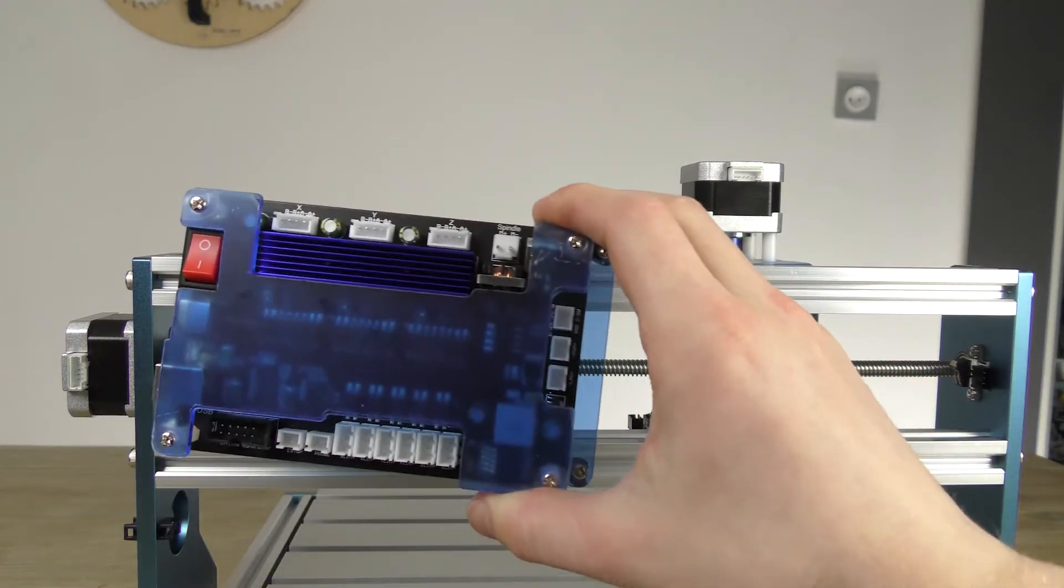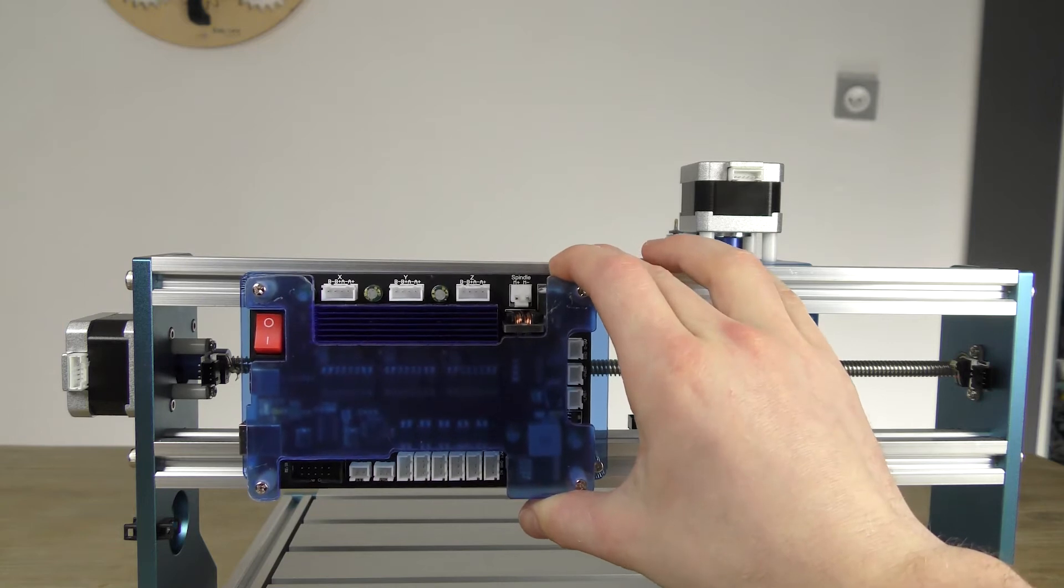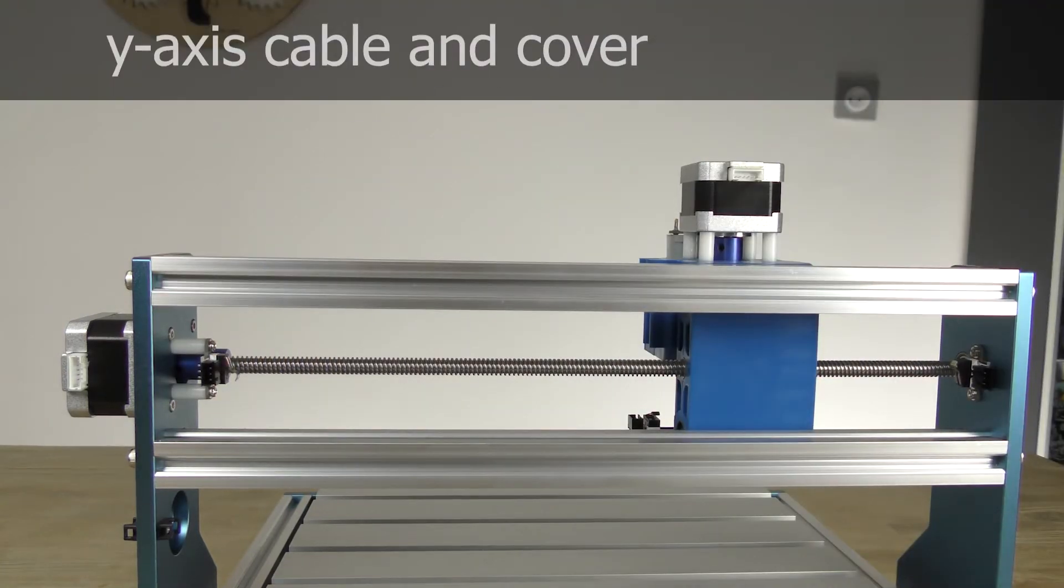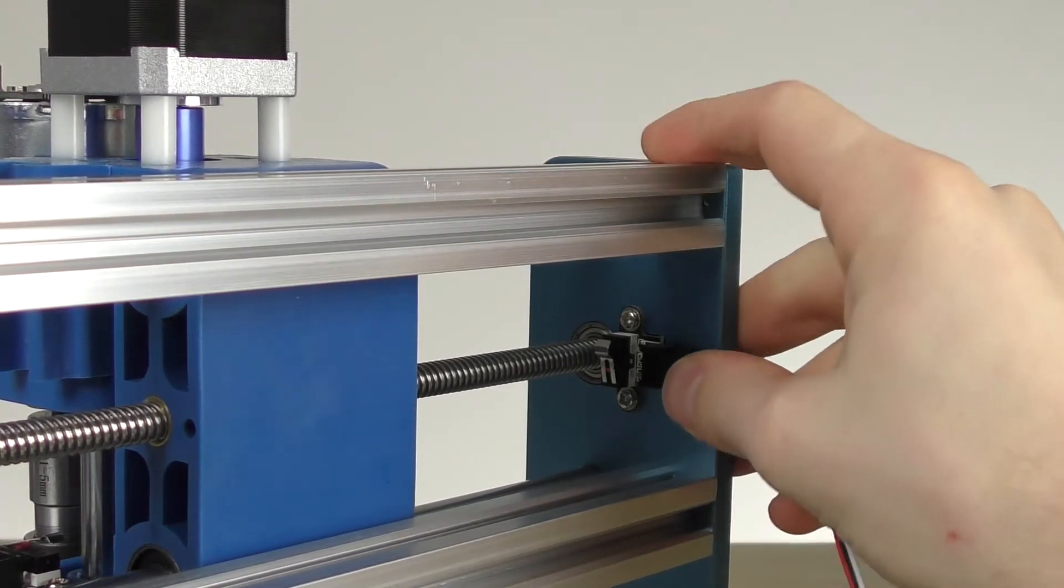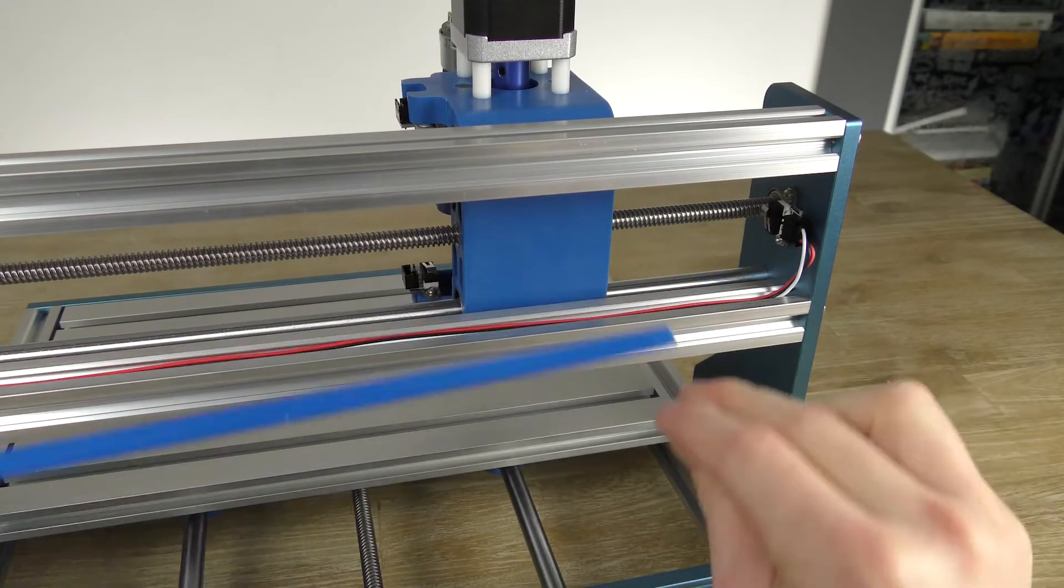We've reached another nice moment to derail from the manual again. Instead of the controller, place the X-axis limit switch cables first. You might have guessed it, but it makes it easier to push that cover in.